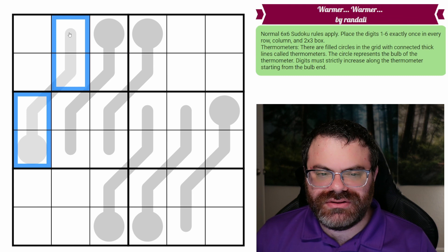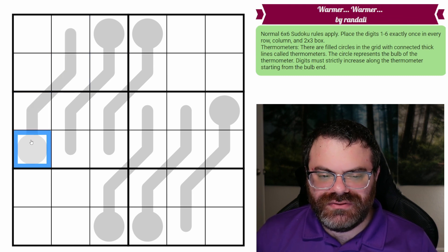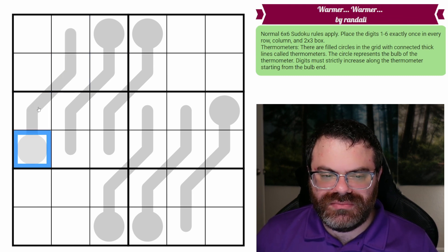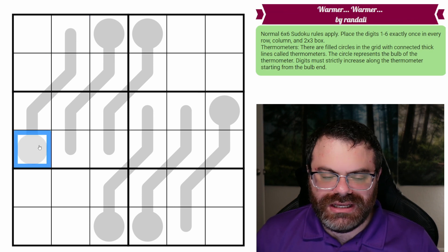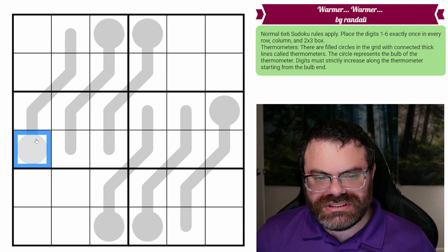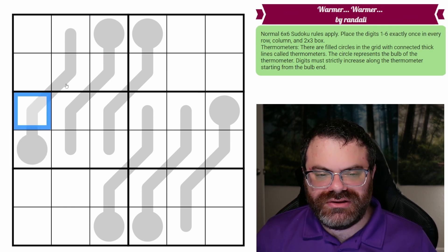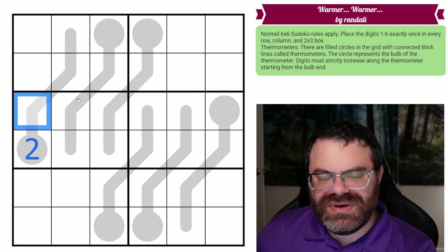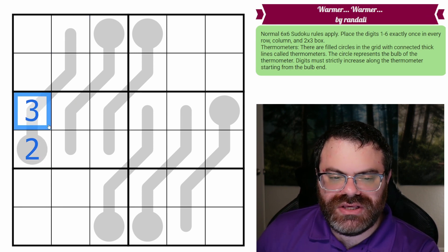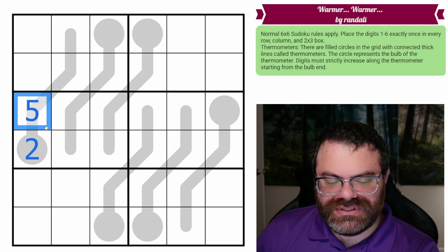We also have these thermometers in the grid. We have a circle which represents the bulb and then we have a line coming out of it. The circle must be the lowest digit on the thermometer and then we have to strictly increase from there. So if this was say a two, this has to be bigger than two. So we could go to three, we can go to four, go to five, etc.